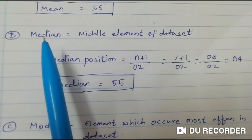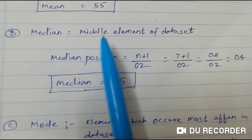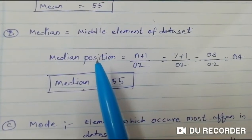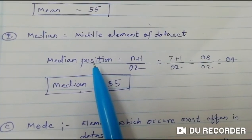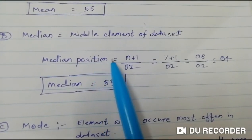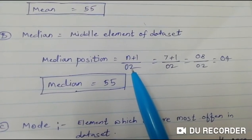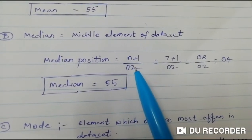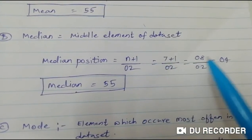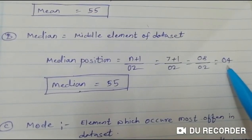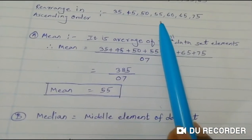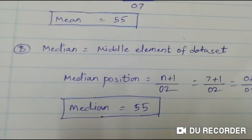Next we will see how to calculate median. Median is nothing but the middle element of the data set. To find the middle position, we use the formula (n+1) divided by 2. If the data set is large we use this formula; if small, we can calculate visually. Here the fourth position is our middle position, and the element 55 is present at that position. So the median is 55.